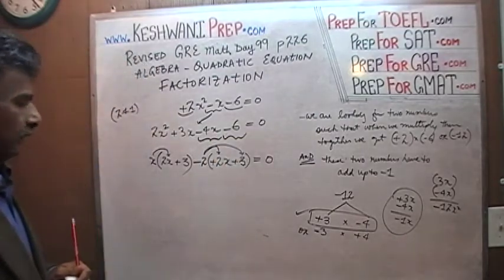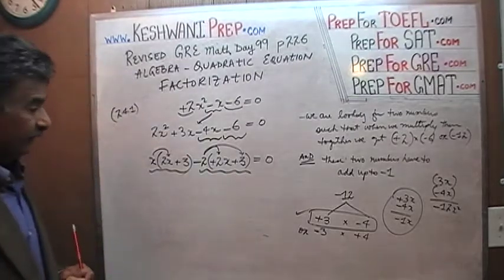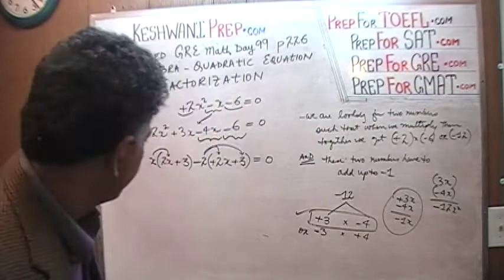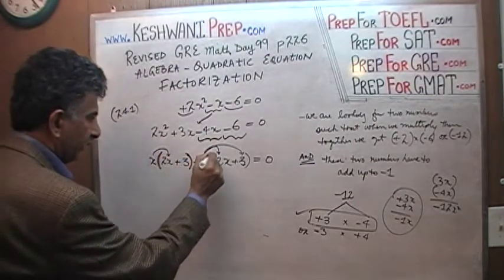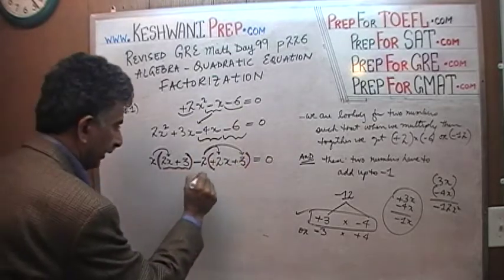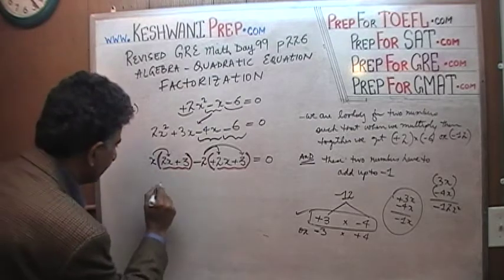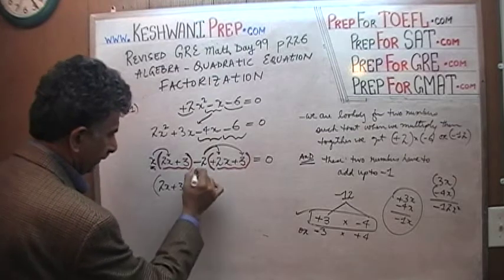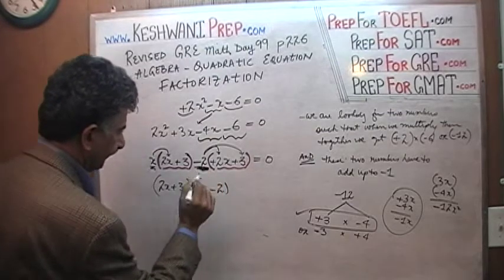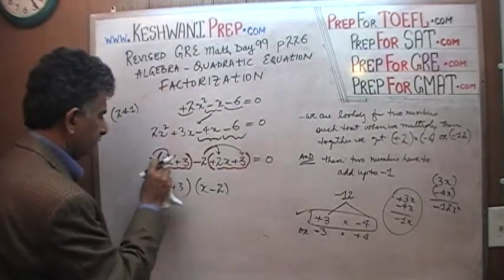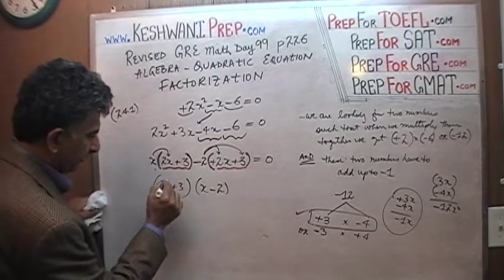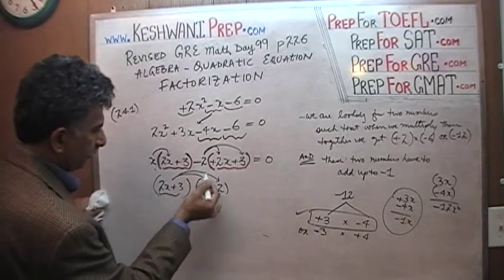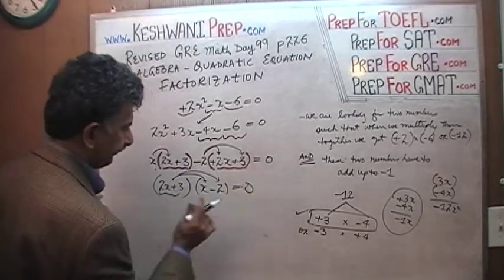Now we see that (2x plus 3) appears in both parts — that is the common factor. We take out (2x plus 3) as common, and we are left with (2x plus 3) times (x minus 2), which equals zero.